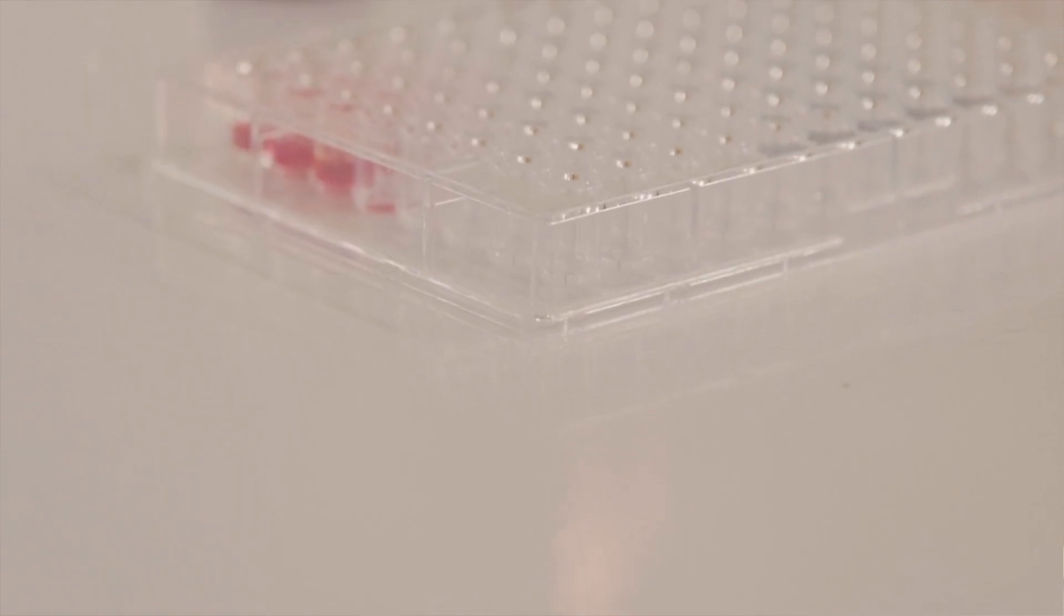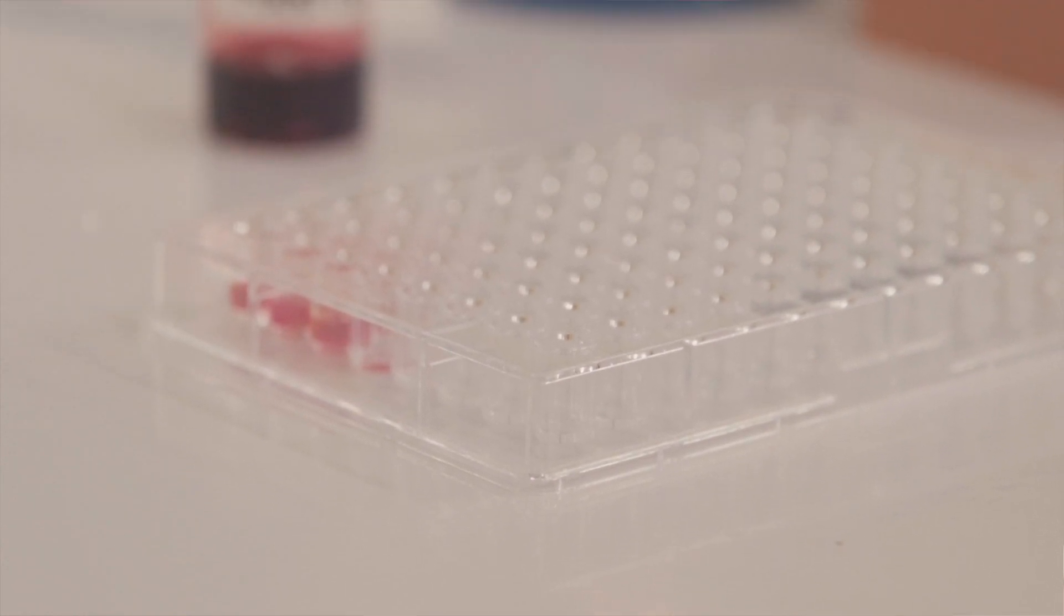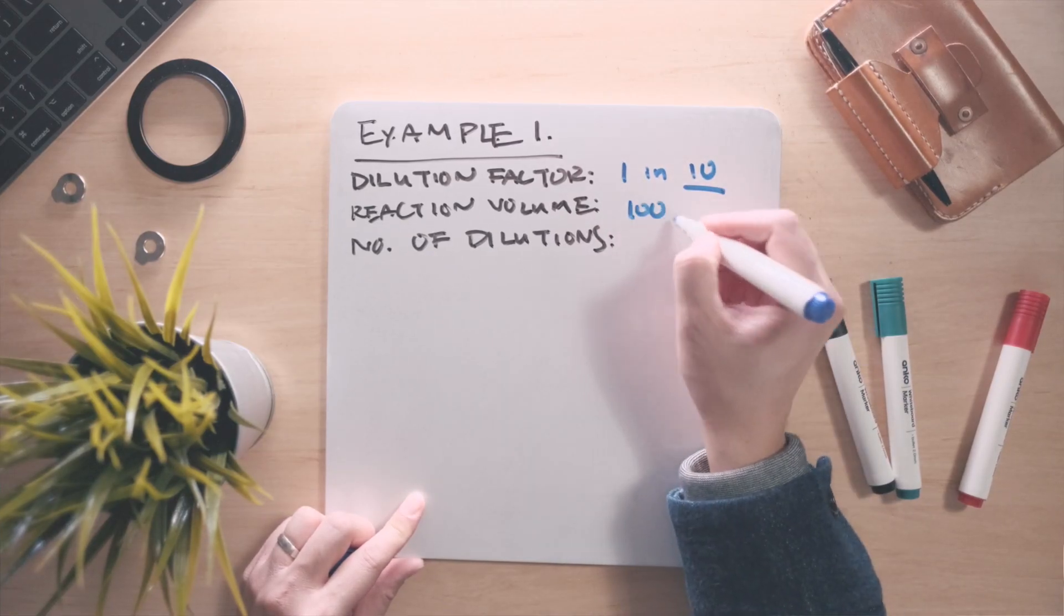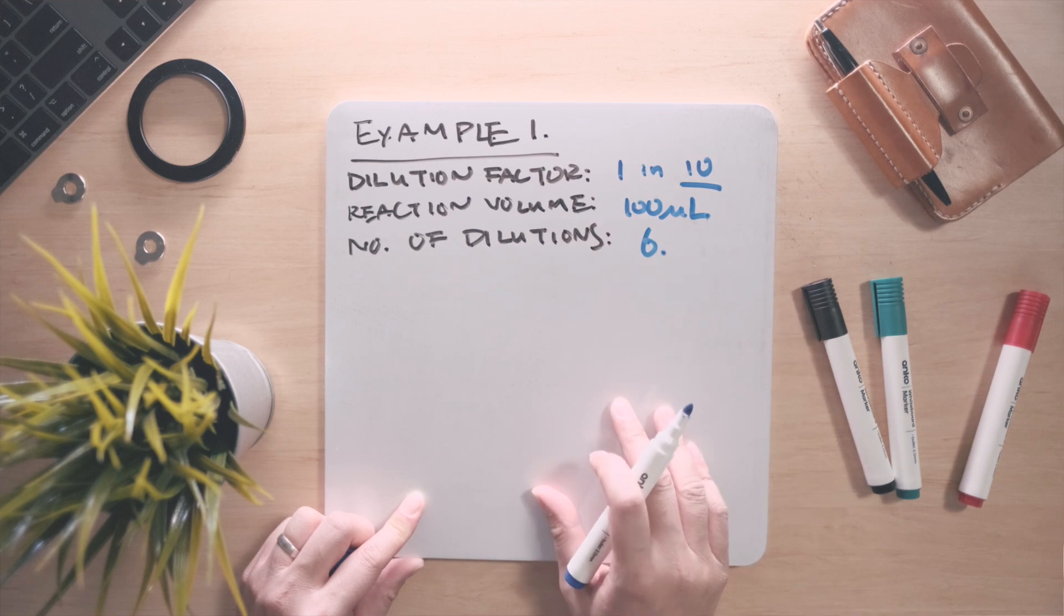To see how serial dilution works in practice, let's look at two examples. The first is a simple dilution of red food coloring dye. We'll use a dilution factor of 1 in 10, a reaction volume of 100 microliters, and we will perform six dilutions in total.